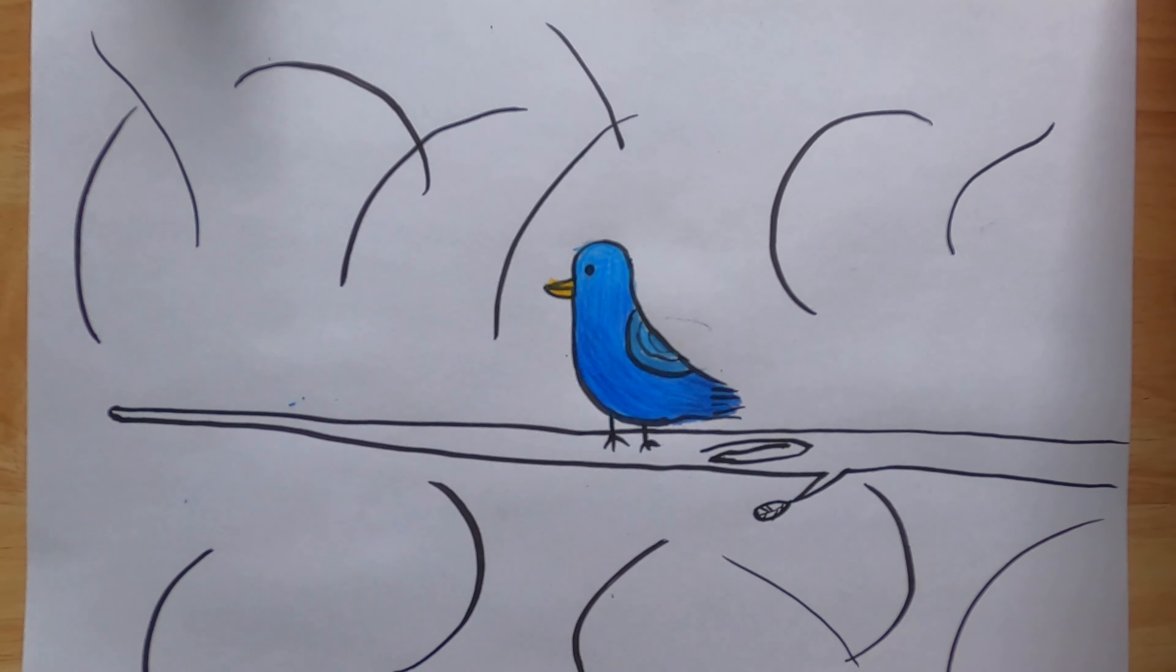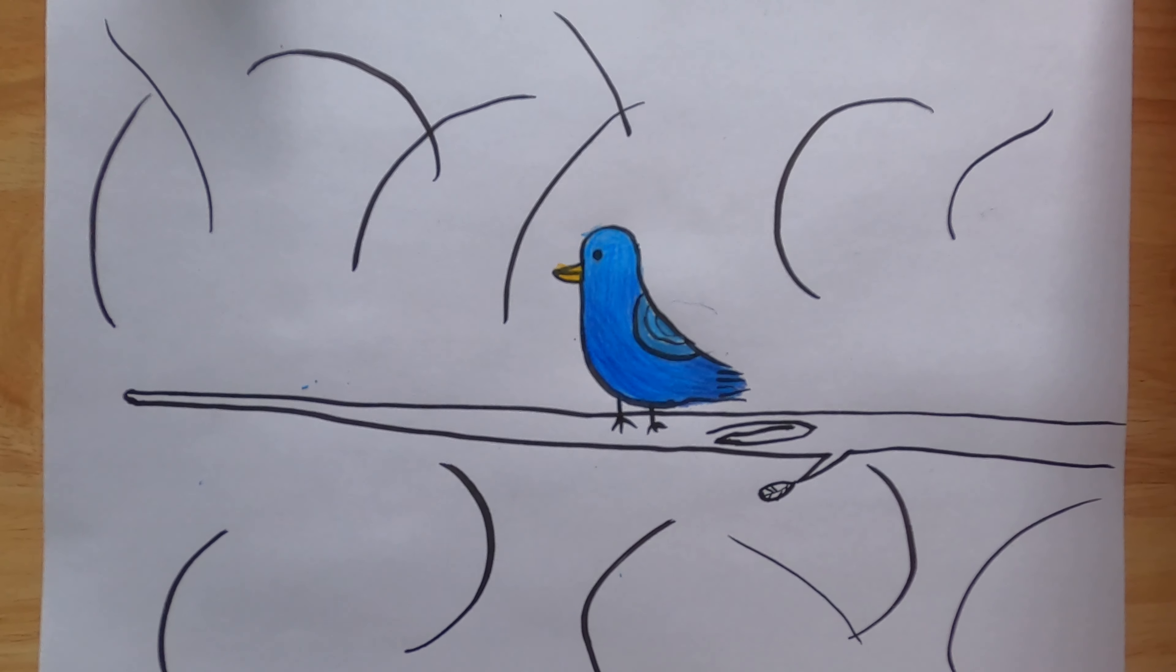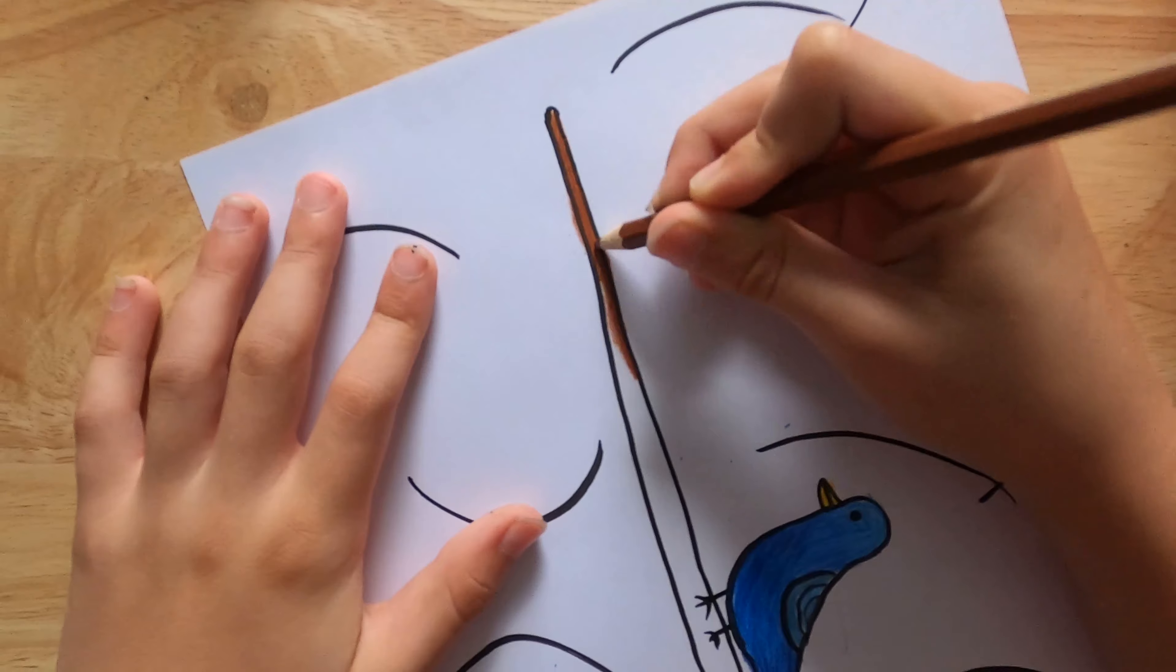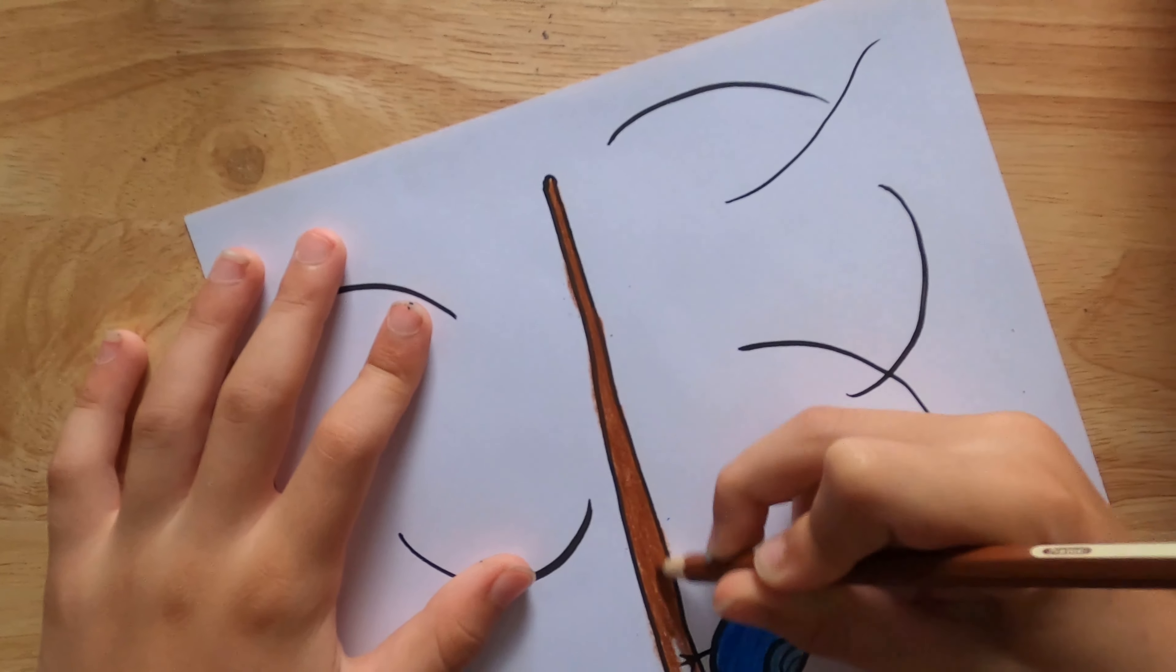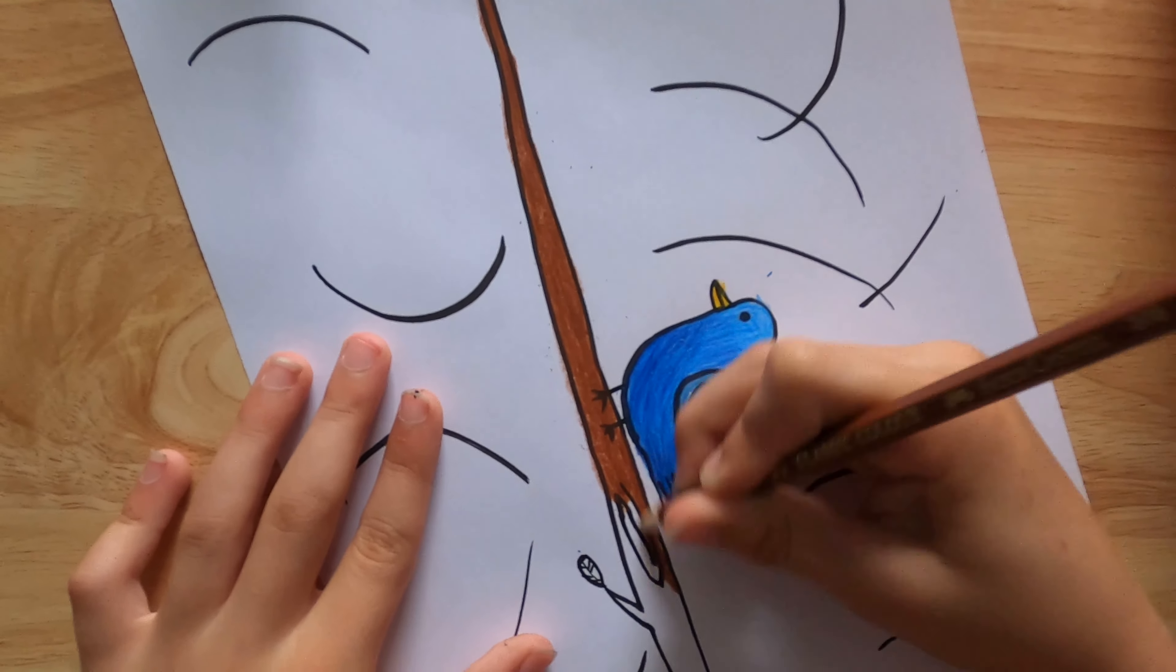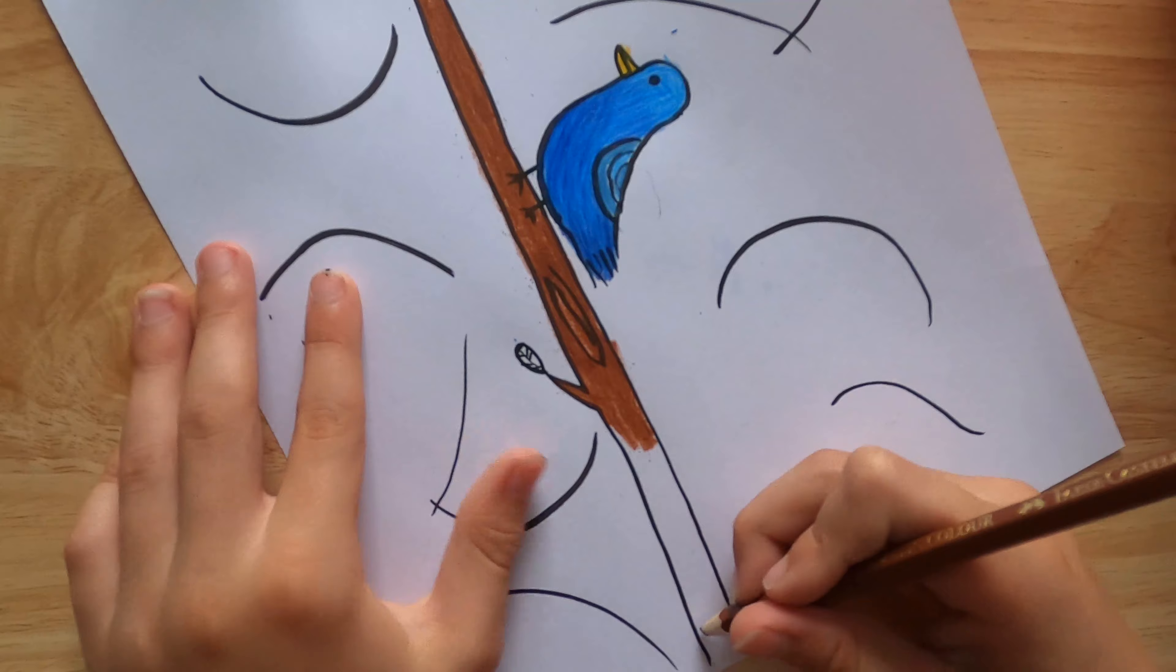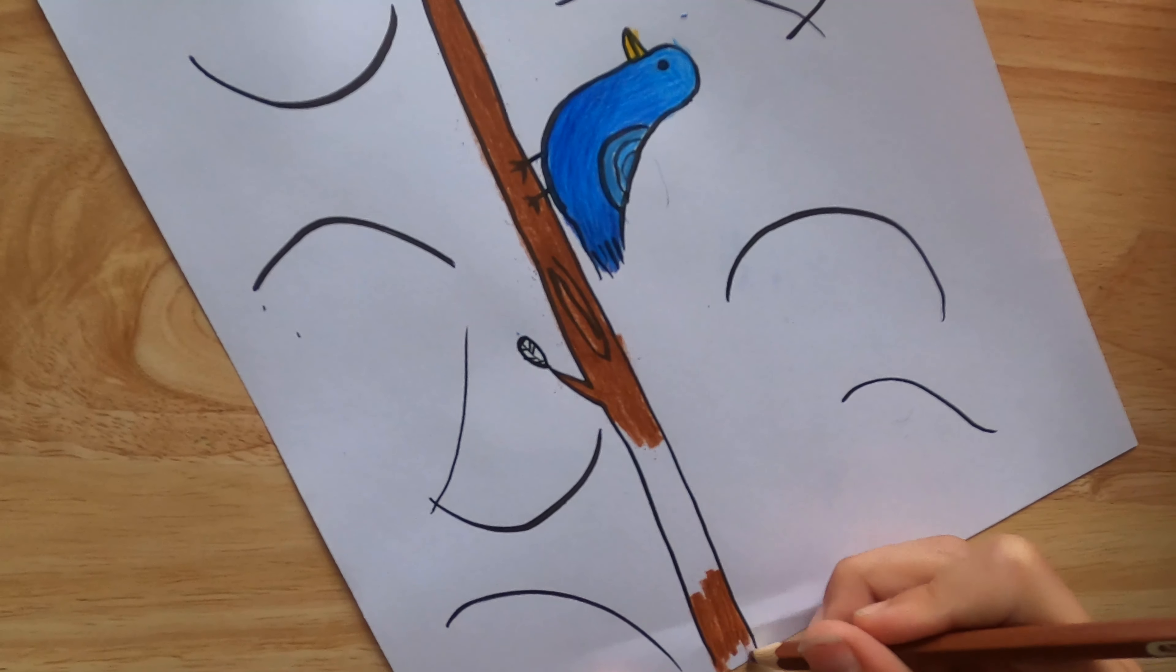Now we're going to need to do the trunk. So first you need to get a nice sort of light brown color. You might want to slant it for this bit and just go over it, nice and dark for the whole thing. When you're coloring you might want to leave a small gap there.